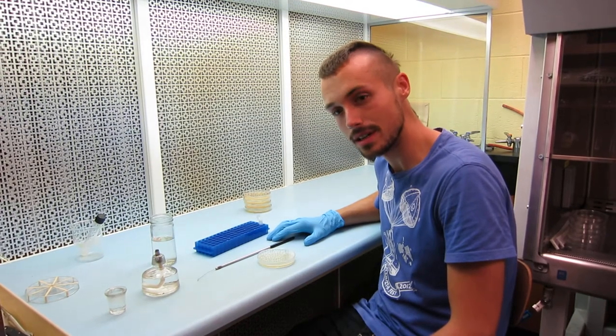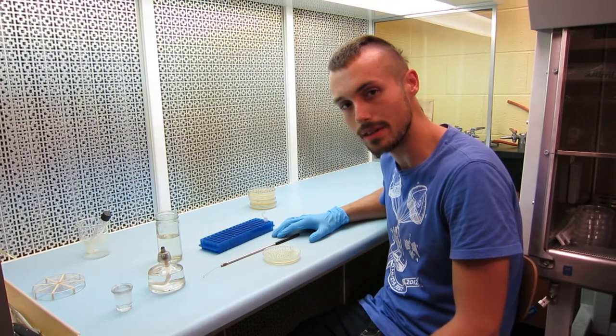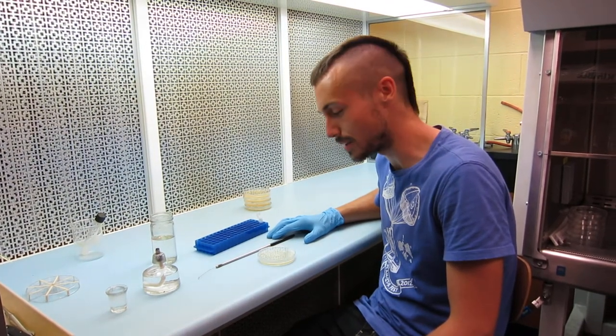The first step with this is you're going to surface sterilize your tissue, and then place it in a vial of sterile water for about 30 minutes to allow the bacteria to stream out. And once you have this done, you can begin the culturing process.